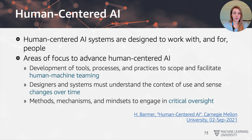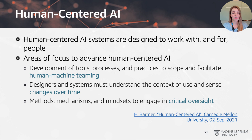Just to give a quick illustration of some of the areas of focus in human-centred design, or more specifically human-centred AI: human-centred AI systems are designed to work with and for people. The areas to focus on include the development of tools, processes, and practices that help scope and facilitate human-machine teaming — really finding ways for humans to collaborate with machine learning systems. Designers and systems must also understand the context of use and sense the changes over time.